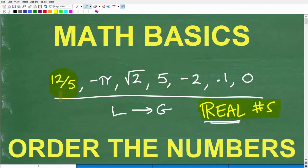You need to recognize, for example, that this number here is a rational number. This is an irrational number, and so is this one. We can classify this number as a whole number or integer. This would be an integer, this is also a rational number, et cetera. Zero would also be considered an integer and a whole number. This is all part of learning about the real numbers.